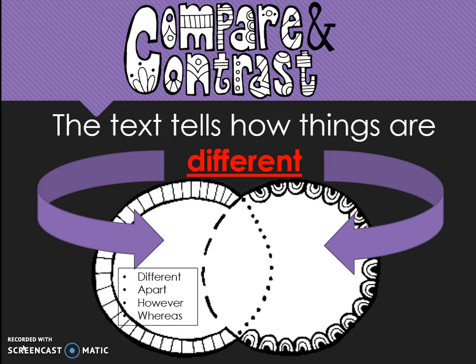The text tells how things are different and the same. The same goes in the middle of the Venn diagram and uses signal words like both, similar, and like.